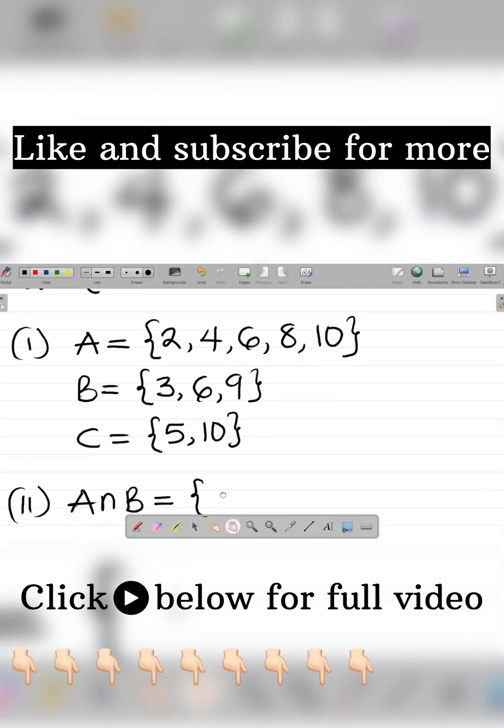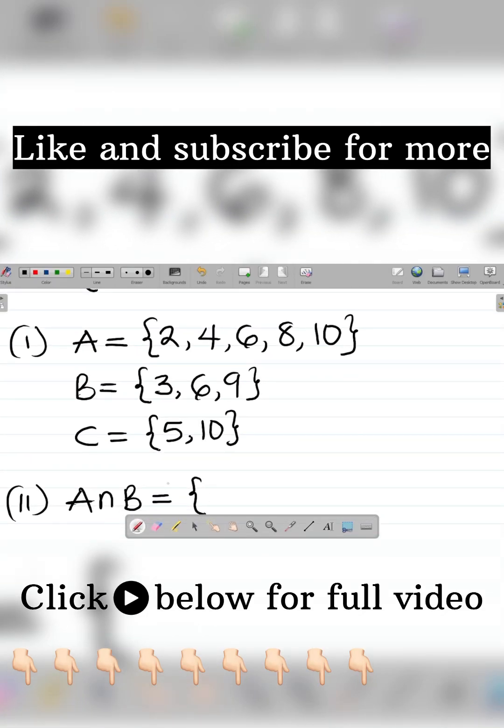That they have in common. So look at A and B, do you have any elements in common? Yes, the answer is what? Six. So A has six, B has six, so A intersection B is actually equal to six.